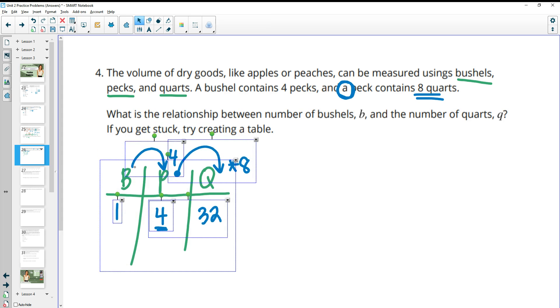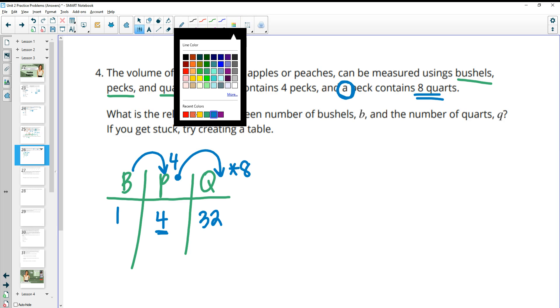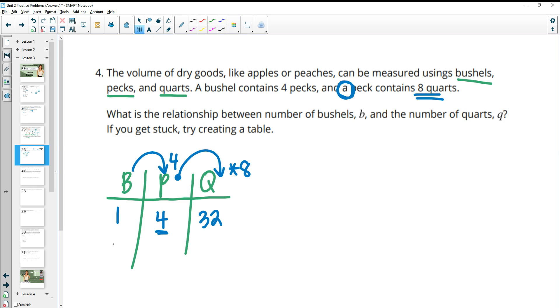So then now it says, what's the relationship between the number of bushels, B, and the number of quarts. So we just take B times four to get to pecs, so that would be 4B. And then we would take the number of pecs, which in this case is 4B, multiply it by eight, and we get 32B. So the number of quarts is equal to 32 times the number of bushels.